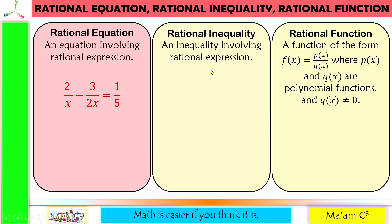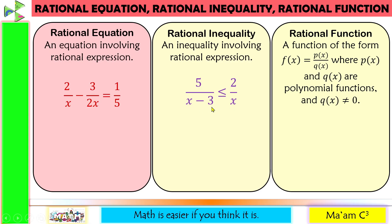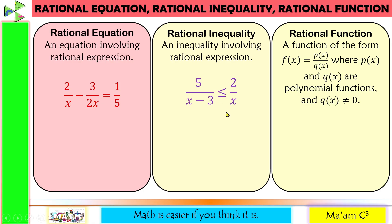Let's have an example for rational inequality. Examine both sides of the inequality symbol — the left side should be a rational expression, the right side should also be a rational expression. And this time there should be an inequality symbol: it could be less than, greater than, less than or equal to, or greater than or equal to.